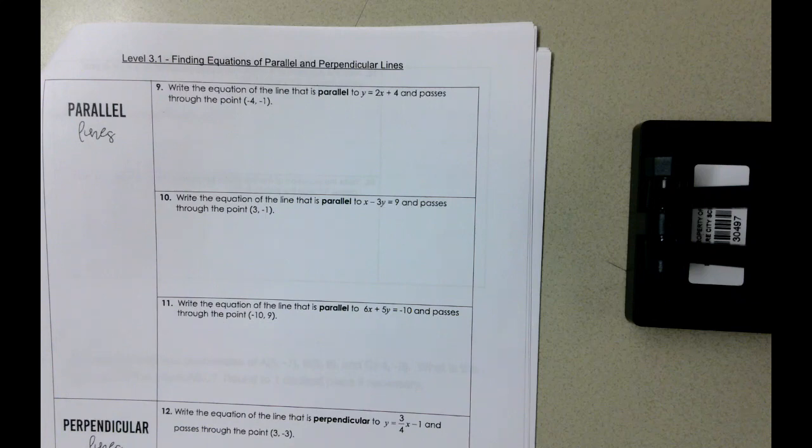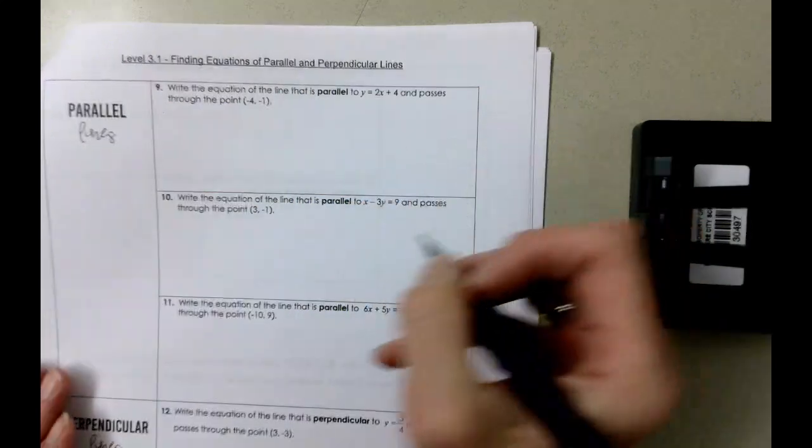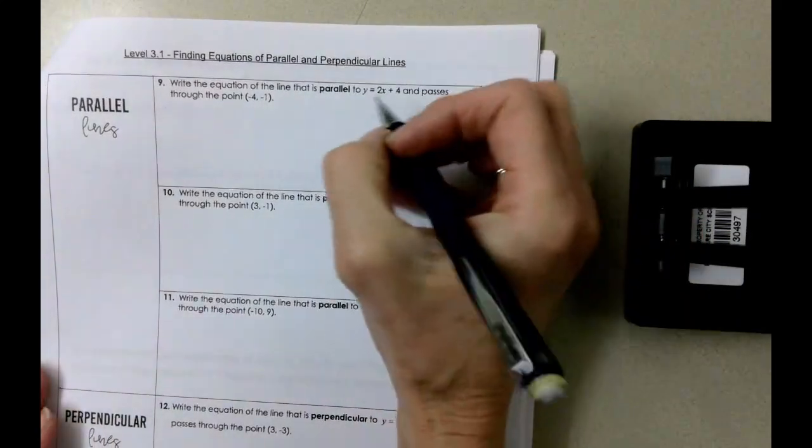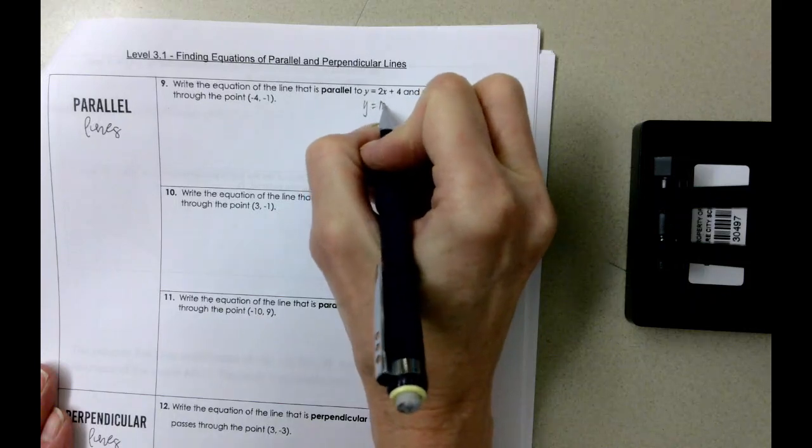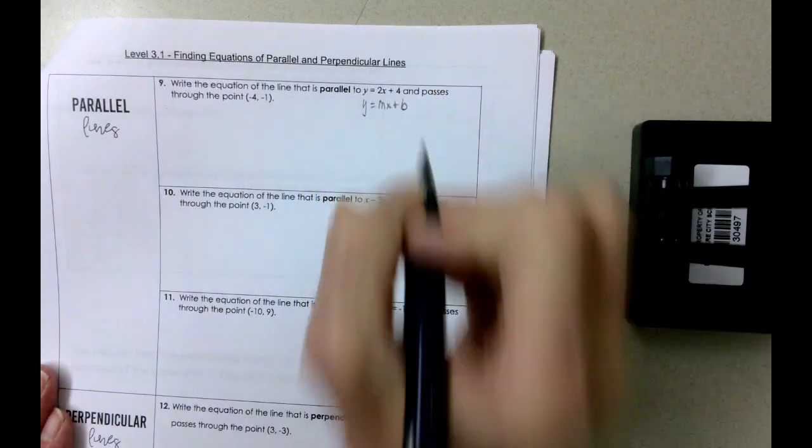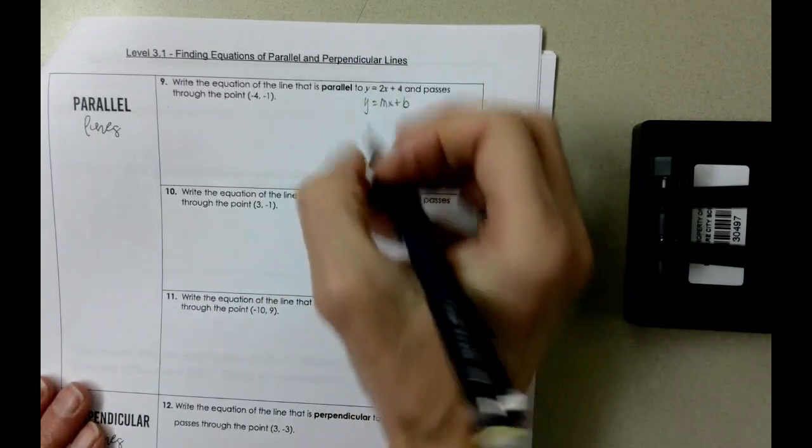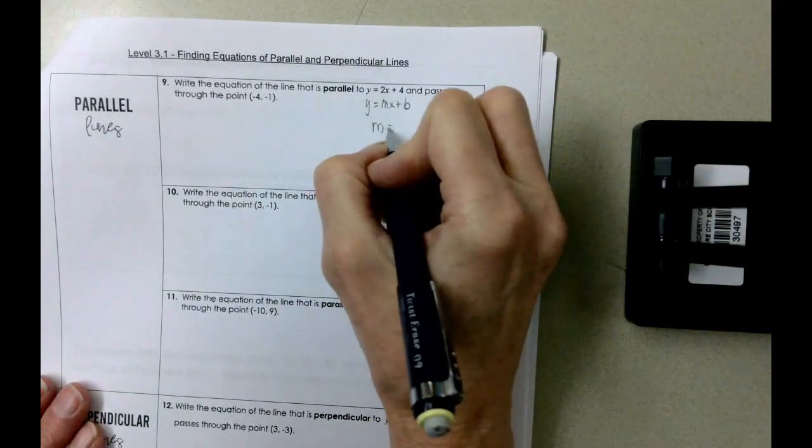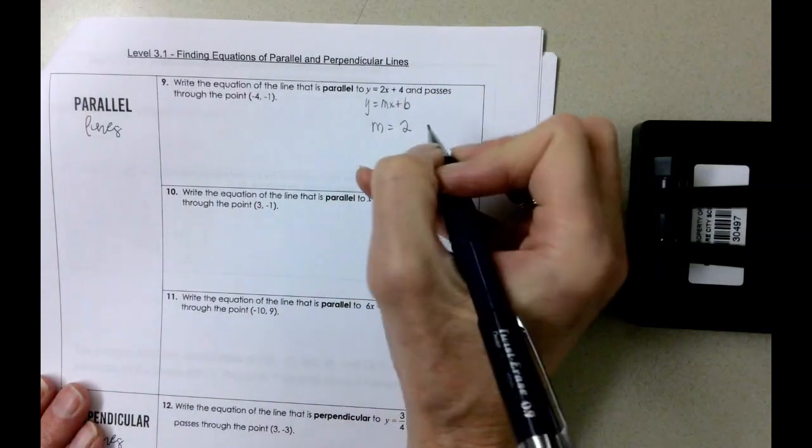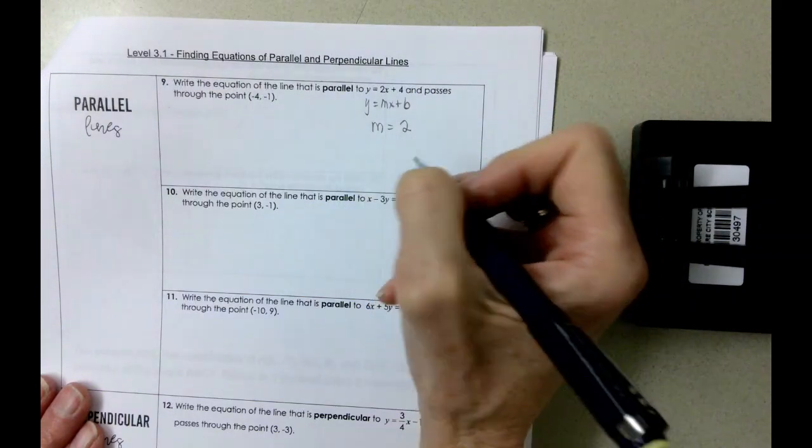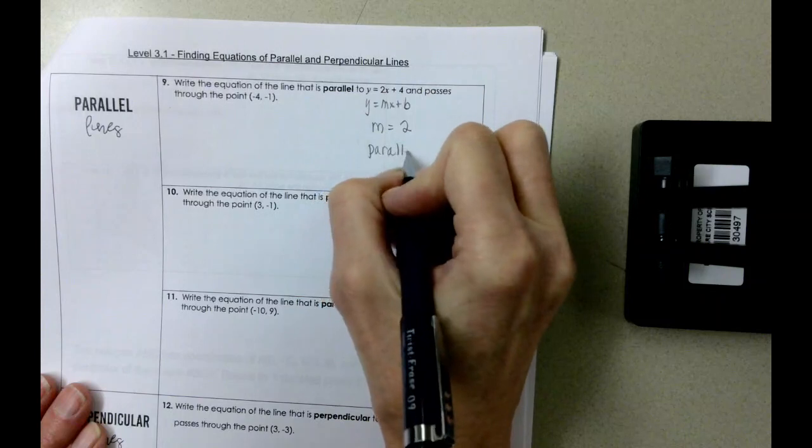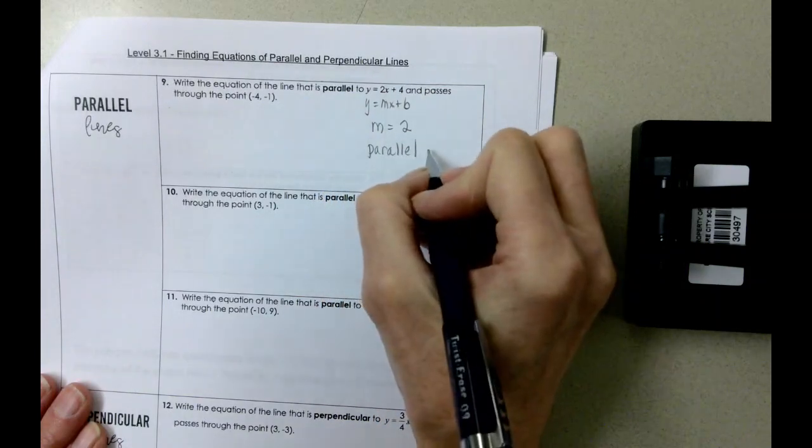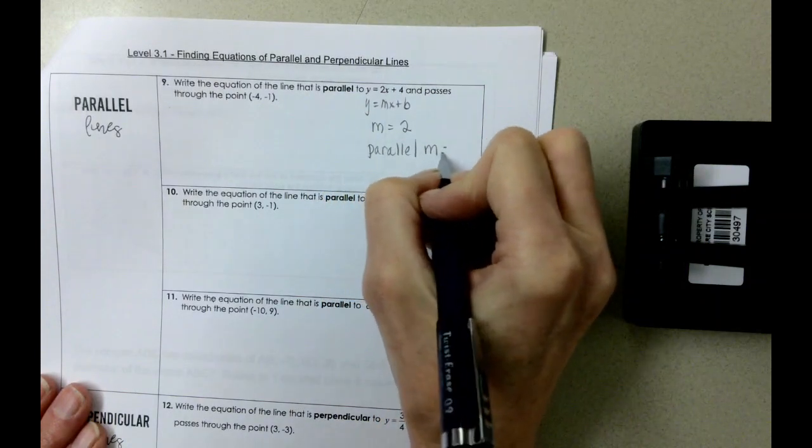Well, let's just start here. What is the slope of this line? Well, the nice thing is it's already written in slope intercept form, so the slope of this line is two.